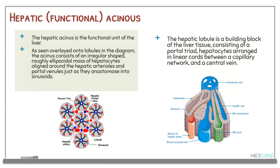There is a distinction between the hepatic acinus and the hepatic lobule. The hepatic acinus is the functional unit of the liver. In our diagram, you can see the hepatic acinus overlaid into lobules. The acinus consists of an irregular-shaped, roughly ellipsoid mass of hepatocytes aligned around the hepatic arterioles and portal venules, just as they anastomose into sinusoids. The hepatic lobule, on the other hand, is the building block of liver tissue, consisting of the hepatic triad, with hepatocytes aligned in linear cords between the capillary network and the central vein.